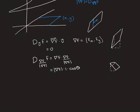Therefore, the derivative in the direction of the gradient vector is the modulus of the gradient vector, and that is the maximum derivative of the function at that point (x, y).